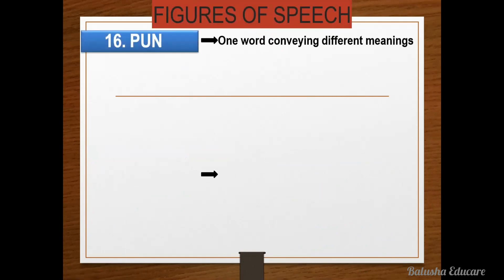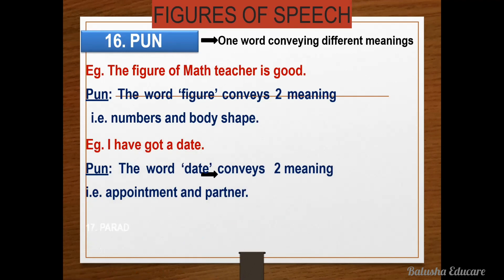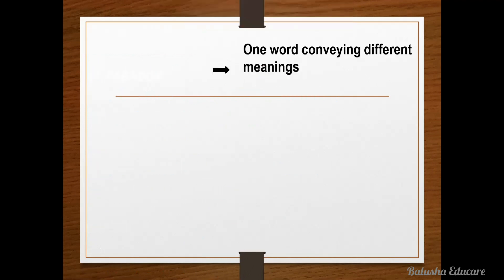The next figure of speech is pun — a word conveying different meanings. For example, 'The figure of the math teacher is good' — pun figure of speech, because the word 'figure' conveys two meanings: that is 'number' or 'body shape.' So there is ambiguity — double meaning. Another example: 'I have got a date' — pun, because the word 'date' conveys two meanings: that is 'appointment' or 'a partner.' This figure of speech is very important.